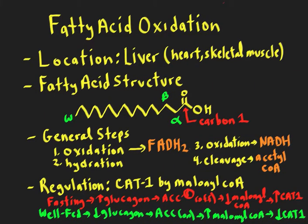After watching this lecture, you should be able to describe fatty acid oxidation or beta oxidation, starting with the adipocyte and following the fatty acid release from triglyceride stores and their delivery to the liver for fatty acid oxidation in the hepatic mitochondria.